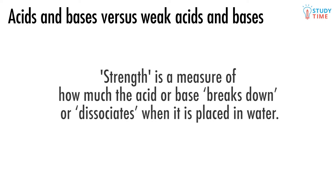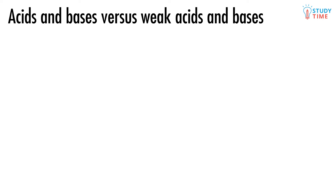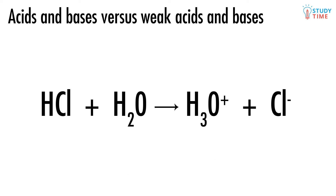An acid or base which dissociates by a single arrow is said to dissociate fully, as all of the acid is able to be used up to turn into its conjugate. For example, look at a familiar equation, the reaction of HCl with water. HCl is a strong acid. All strong acids will fully dissolve in water, producing lots of hydronium ions, H3O+.